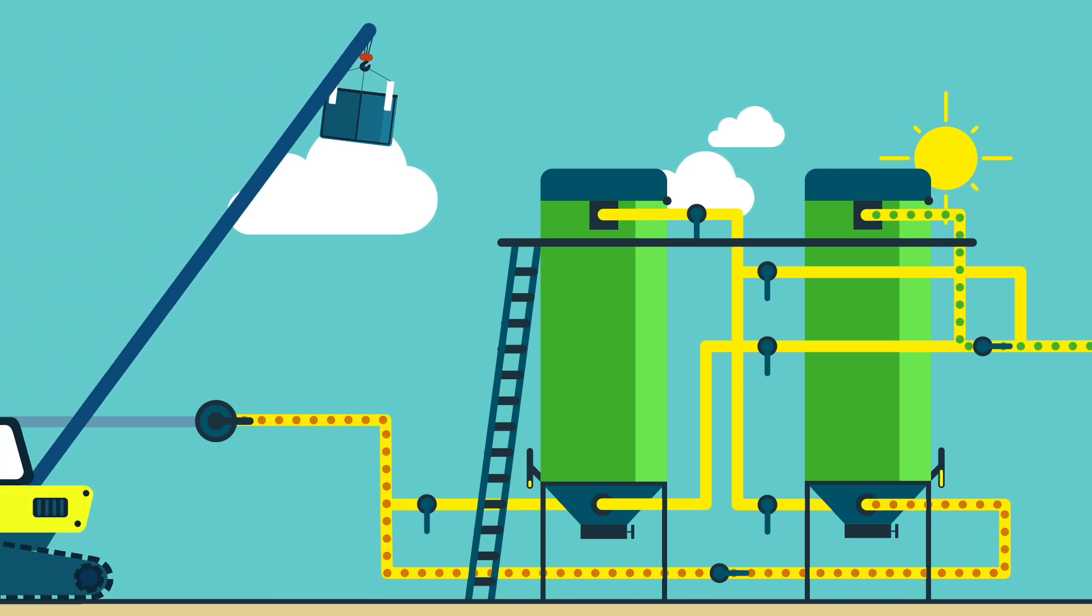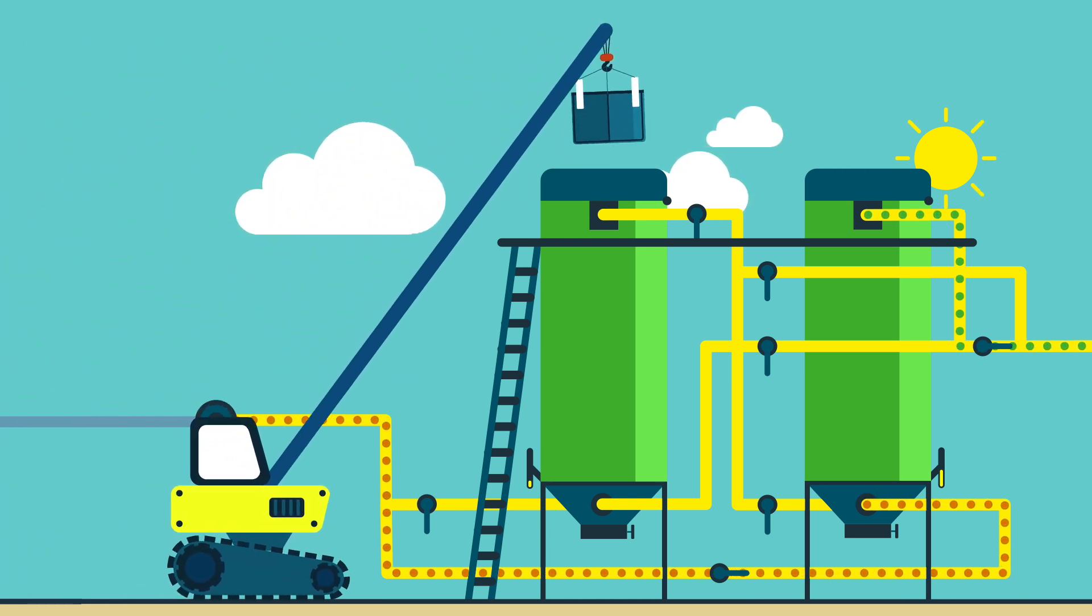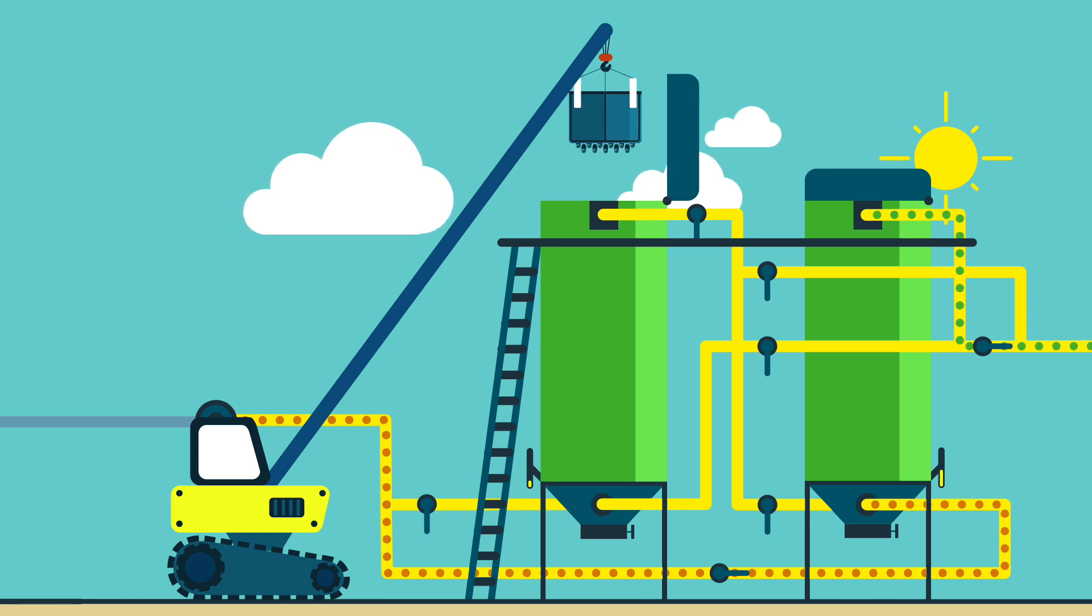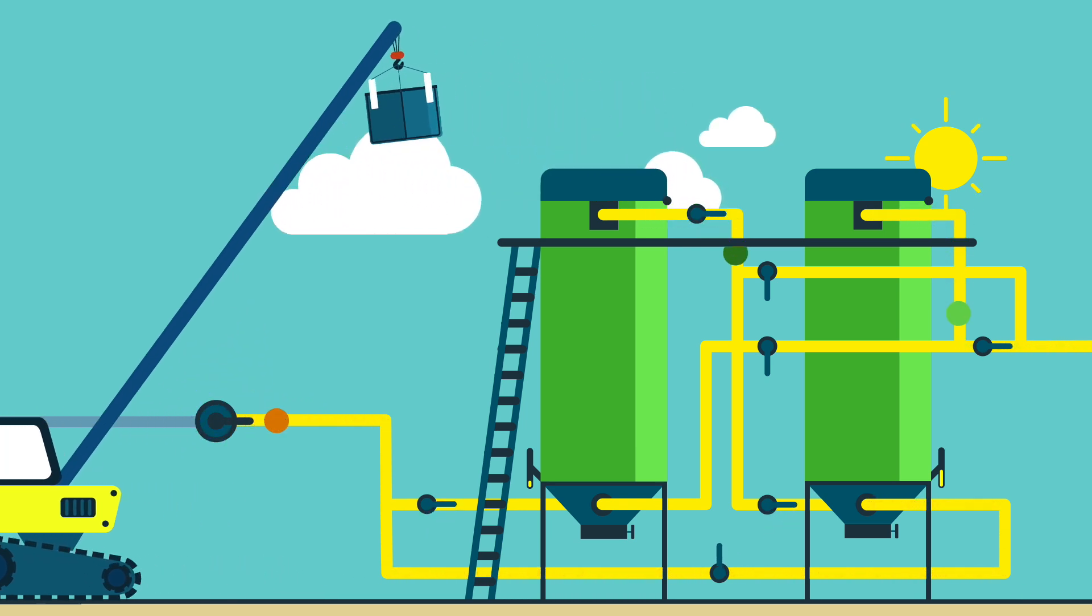Once empty, we close the valve to prepare for filling with fresh media. We open the top manhole and, with a crane, empty several big bags filled with new media. This way, we close the cycle and have both vessels operating again.